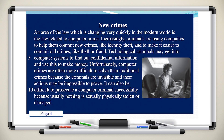An area of the law which is changing very quickly in the modern world is the law related to computer crime. Increasingly, criminals are using computers to help them commit new crimes, like identity theft, and to make it easier to commit old crimes, like theft or fraud. Technological criminals may get into computer systems to find out confidential information and use this to make money. Unfortunately, computer crimes are often more difficult to solve than traditional crimes because the criminals are invisible and their actions may be impossible to prove.